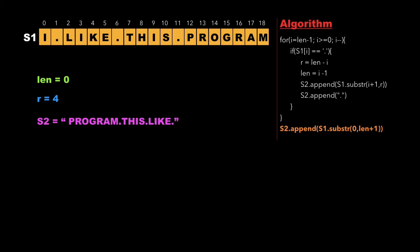Finally, we append the substring from 0 to length plus 1 into s2 — the remaining character is 'I'. So the final output string is 'program.this.like.I'.